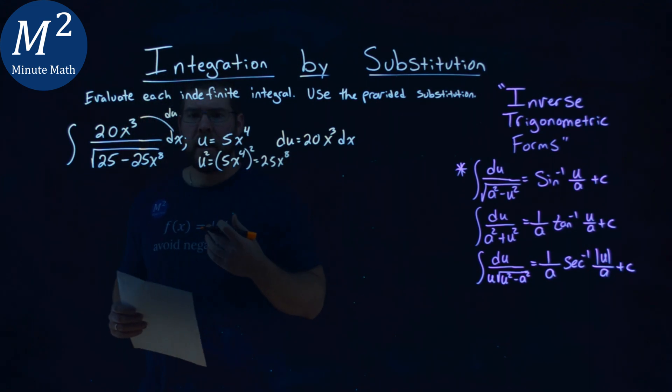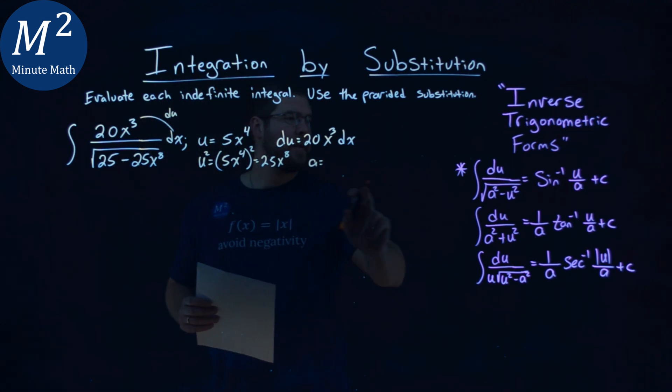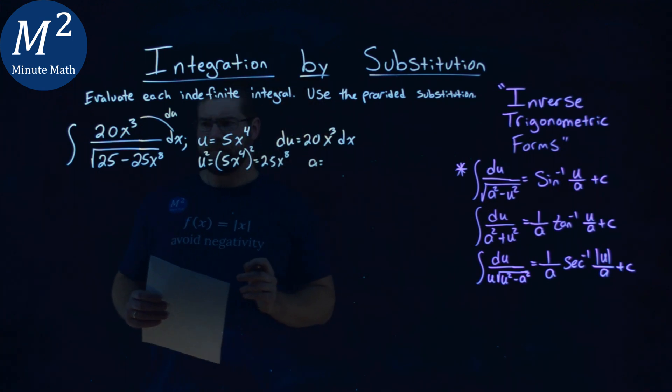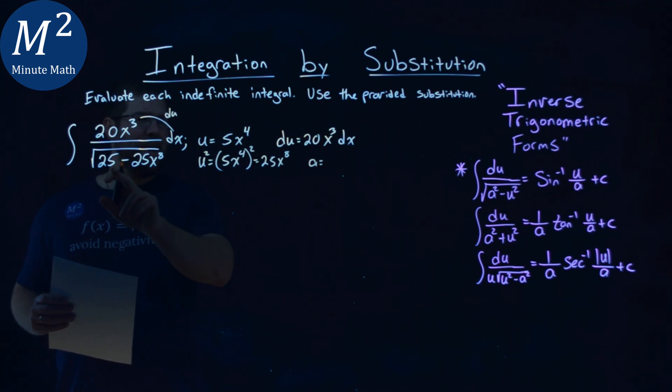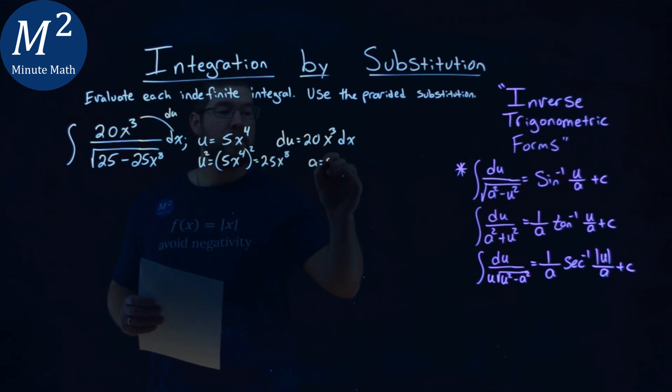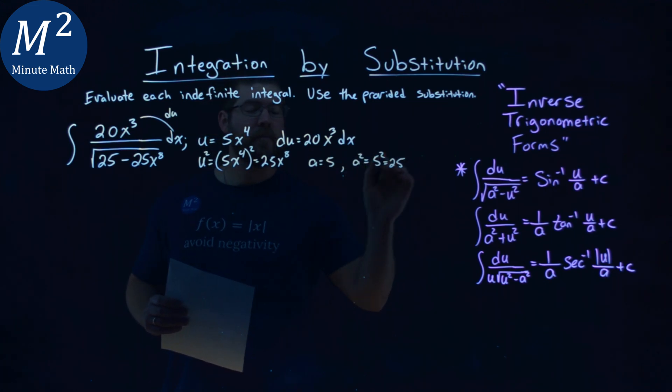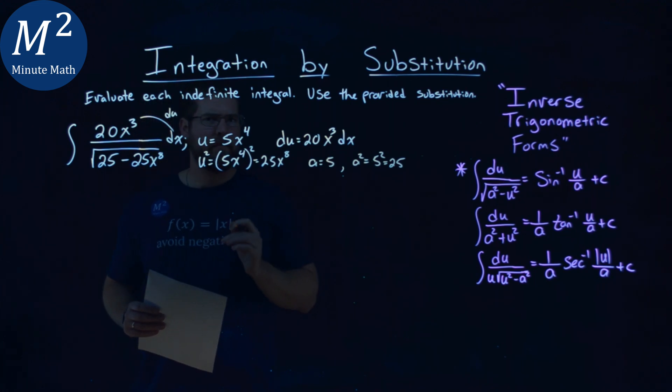Now, we need to find an a value. Well, if my a value here looks like it's lining up, so if I look at it, it looks like I'm lining up with my arc sine. We have an a value of 5, and so a squared is 5 squared, which is 25. So, we line up pretty perfectly here.